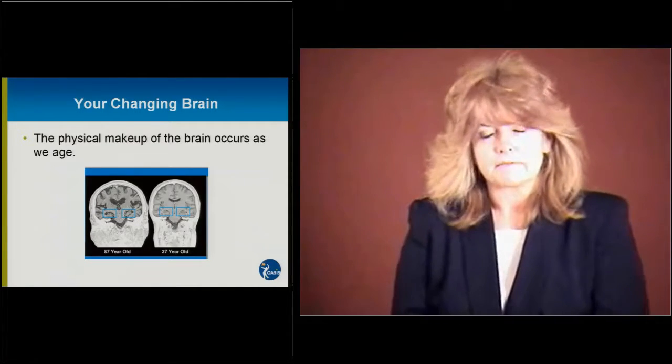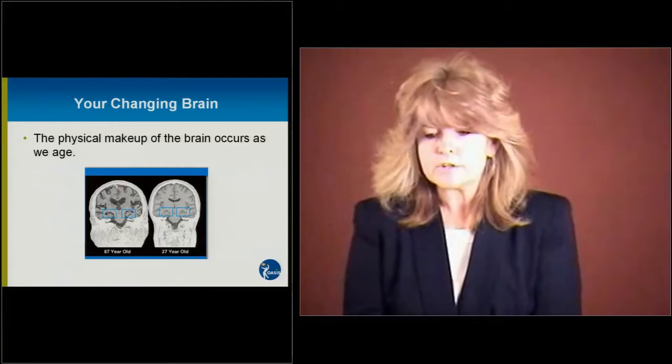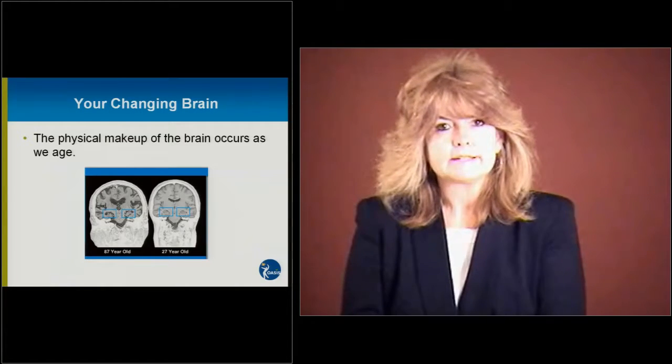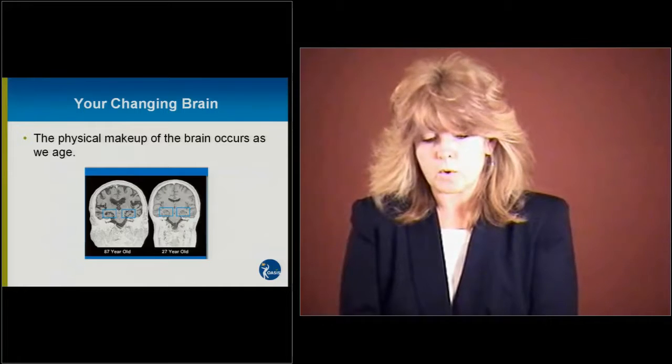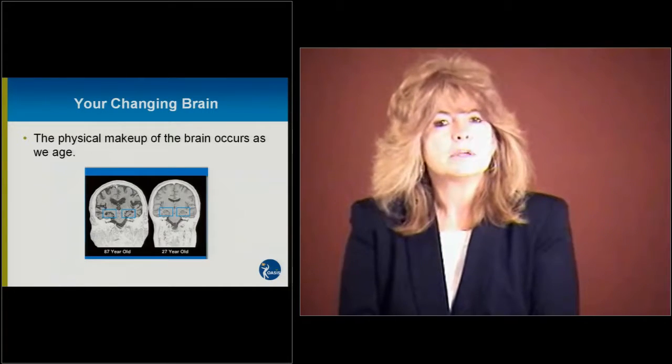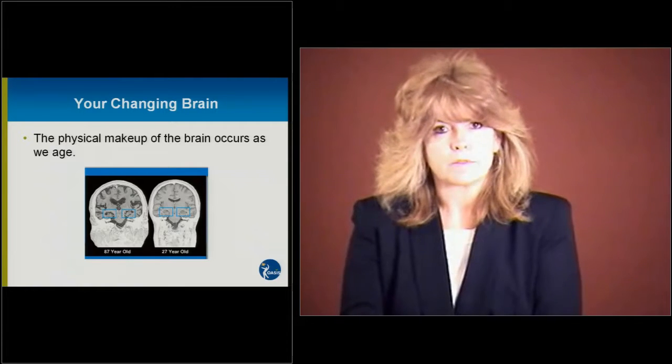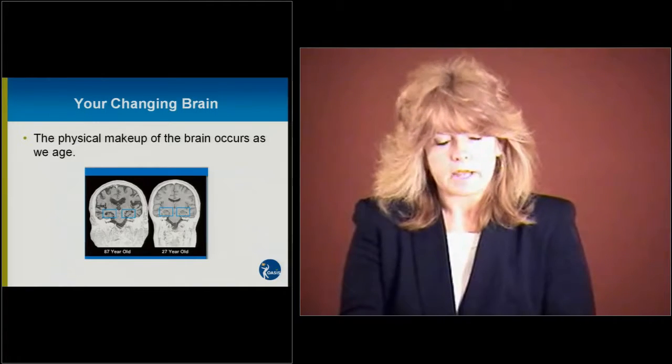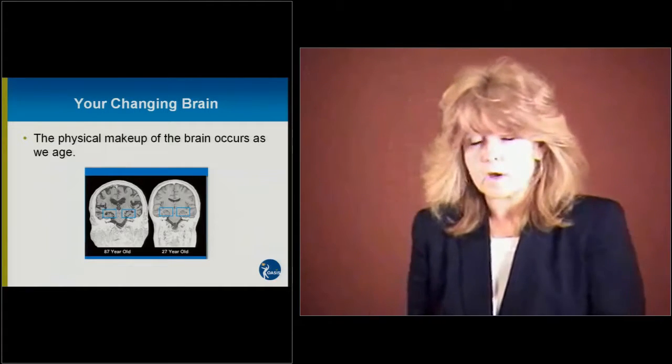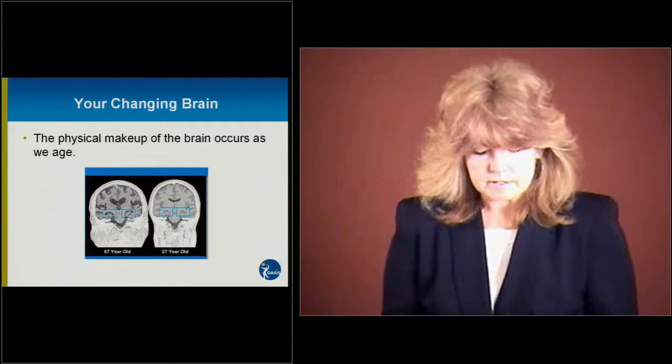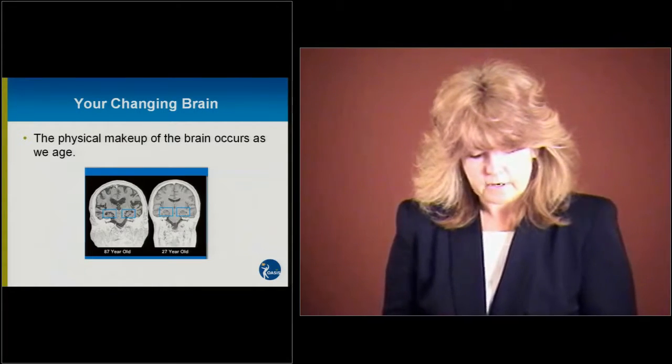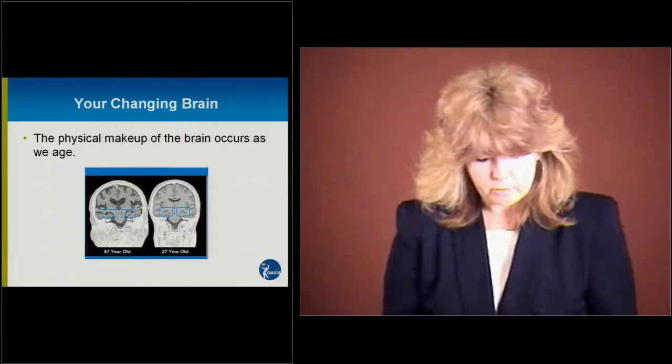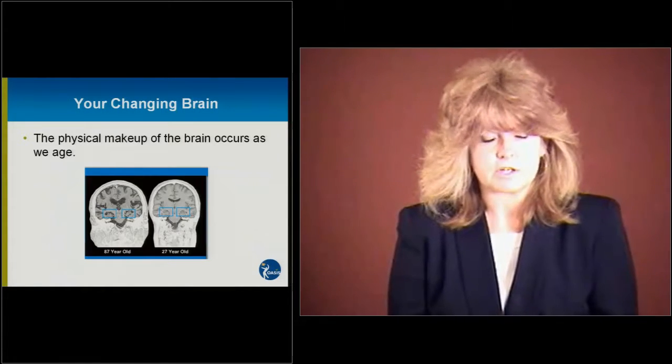So let's go ahead and begin by looking at the first slide, your changing brain. As you can see, we have a picture of the physical makeup of the brain as it occurs when we age. You will see an 87-year-old brain and you will also see a 27-year-old brain. And within the pictures, you will actually see widening valleys within those functioning areas of the brain. Now, these actual valleys fill with fluid. And for a long time, they thought that this is what impaired cognitive functioning. But as time has gone on, people actually now realize that cognitive functioning is more likely to be caused by a loss of synapses. In other words, the connections between neurons through which information is transmitted.